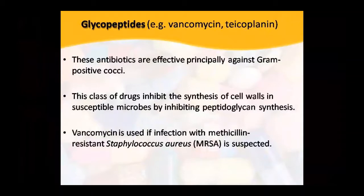Next is glycopeptides — vancomycin and teicoplanin. These antibiotics principally act against gram-positive cocci. This class of drugs works on the cell wall of bacteria. They inhibit cell wall synthesis by preventing peptidoglycan synthesis — so the bacteria cannot build a cell wall and die.